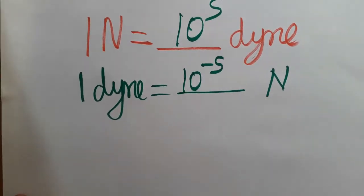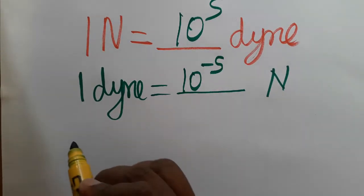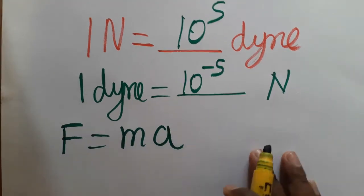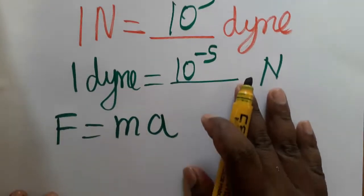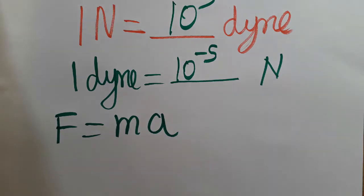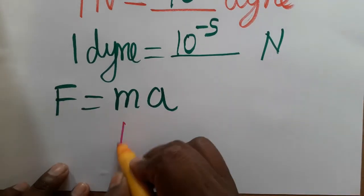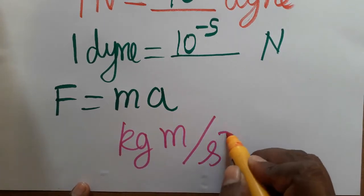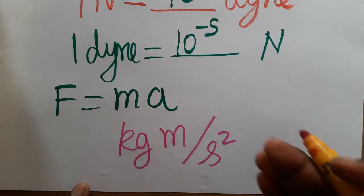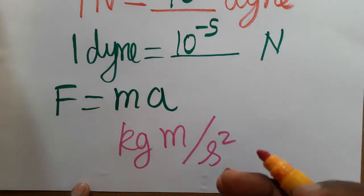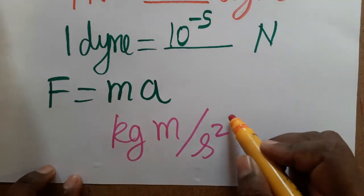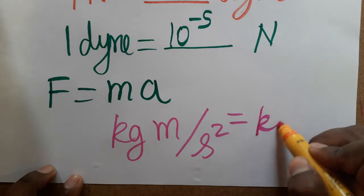First we need to know the SI unit of force. Force is equal to mass into acceleration. Mass SI unit is kilogram, and acceleration SI unit is meter per second squared — because acceleration is velocity divided by time, and velocity is meter per second, so dividing by second gives meter per second squared.